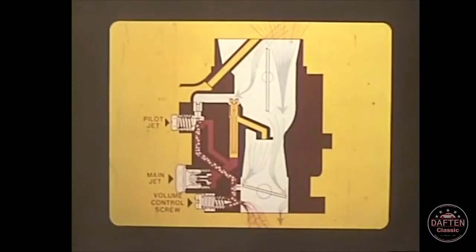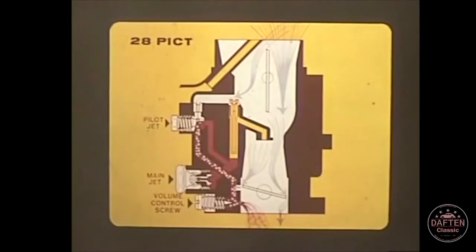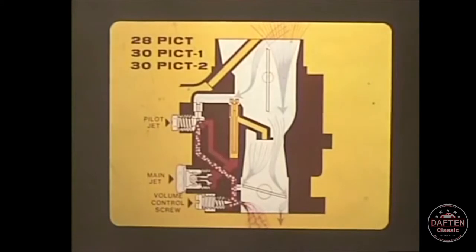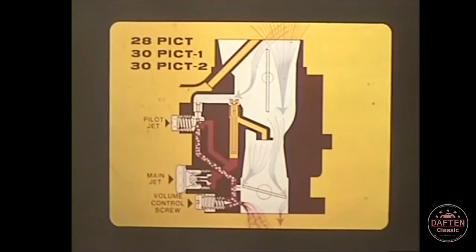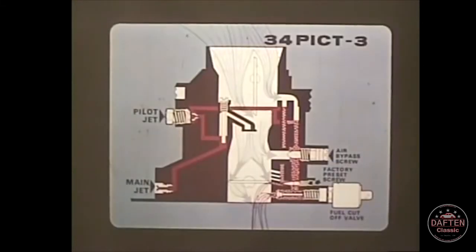We're talking about the idle speed adjustment. So whether you're working with a 28-PICT, the 30-PICT-1 or dash-2, the 30-PICT-3, or even the 34-PICT-3, it's the idle speed adjustment that brings the Volkswagen engine up to full, smooth efficiency.